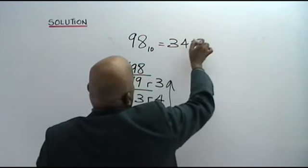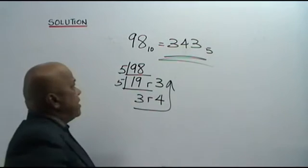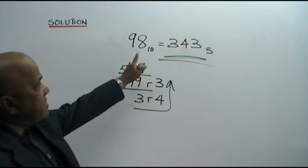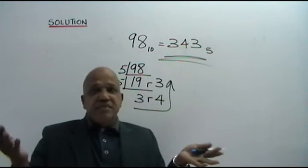343 base 5. That is the value of 98 base 10 in base 5. Very simple.